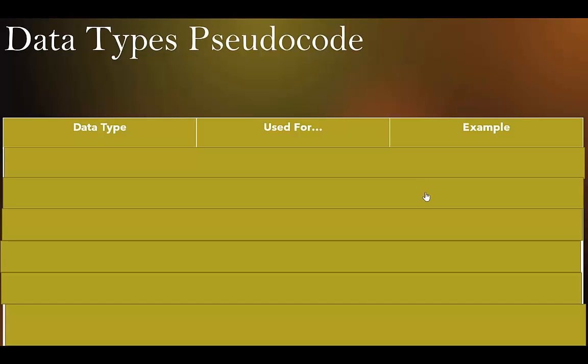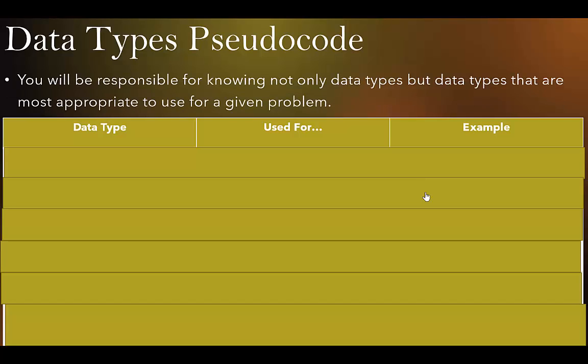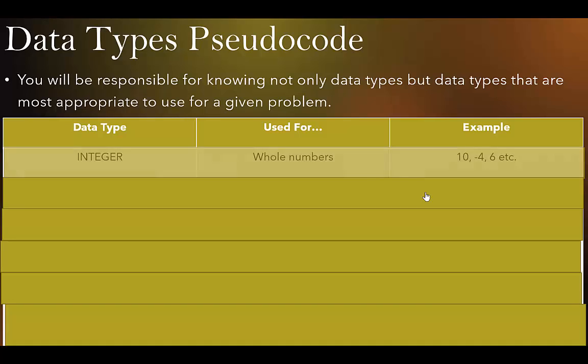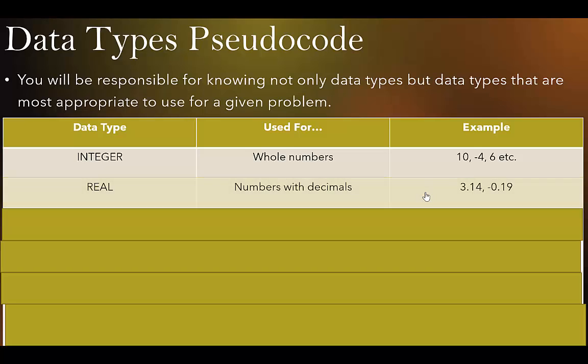Data types. There are multiple data types for pseudocode that you need to be familiar with, and you need to know which ones are most appropriate to use for a given problem. The first one is INTEGER, used for whole numbers — 10, negative 4, 6, negative 5. It can be odd or even, but it's going to be whole numbers.